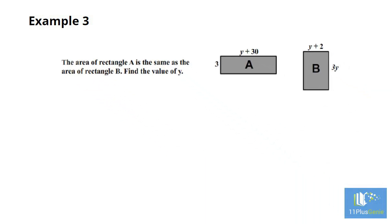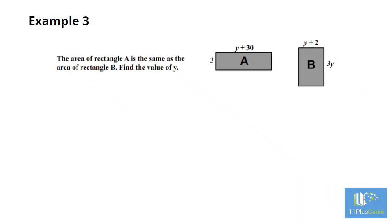Example 3. These two rectangles have the same area. Work out the value of y. For rectangle A we have area equal 3 times y plus 30. This equals to 3y plus 90.